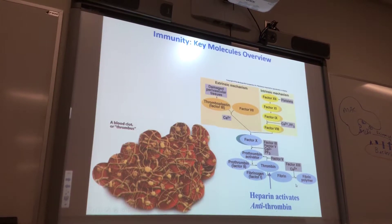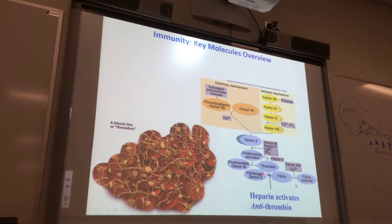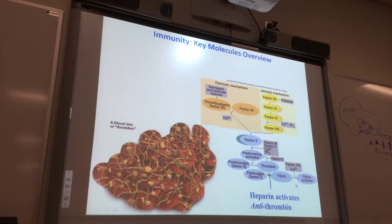Let's do some key molecules overview. We've seen this cartoon before — the clotting cascade. Here's a scanning electron micrograph of a blood clot, also called a thrombus. There's fibrin — the fibrin polymer making the clot. There's also a molecule called heparin, and it will activate another enzyme called anti-thrombin. If you activate anti-thrombin, it keeps blood from clotting.